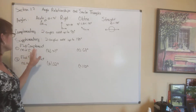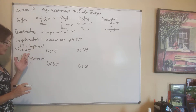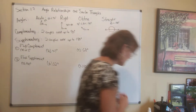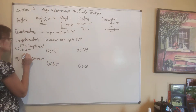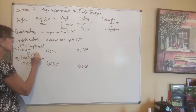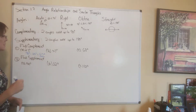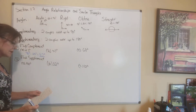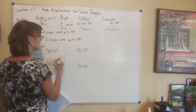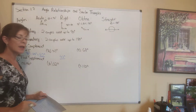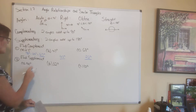Let's find the complement of 23 degrees. We subtract 23 from 90: 90 minus 23 gives us 67 degrees — that's the complement. Similarly, the complement of 47 degrees is 90 minus 47, which is 43 degrees. And 90 minus 68 degrees gives us 22 degrees as its complement.